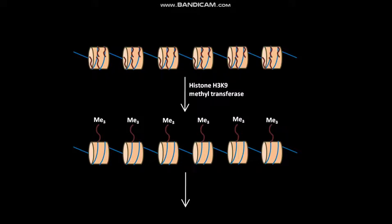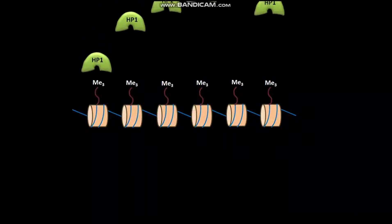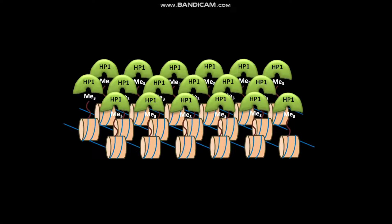In the next step, HP1 molecules bind to the histone H3 N-terminal tails trimethylated at lysine-9. Histone-bound HP1 molecules then associate with each other and form an oligomer. This histone-bound HP1 association is called HP1 oligomerization.